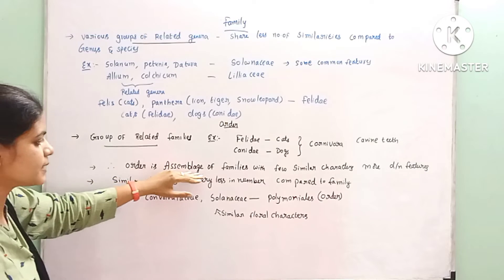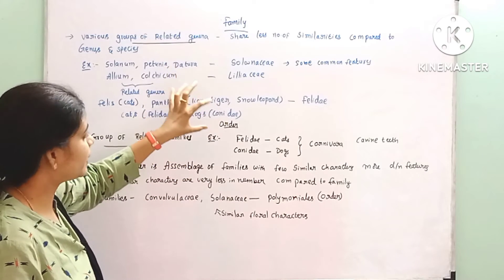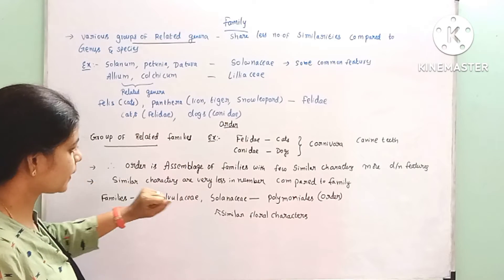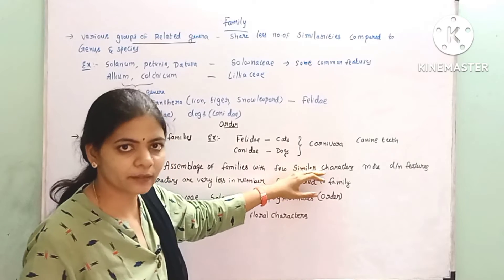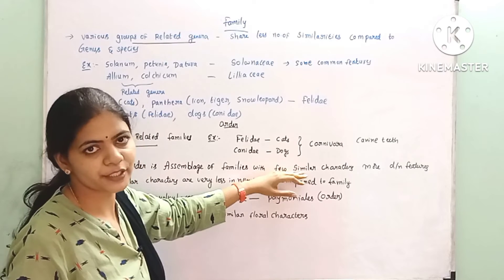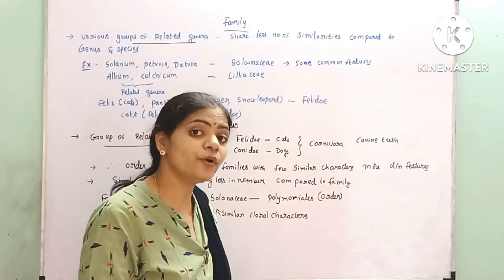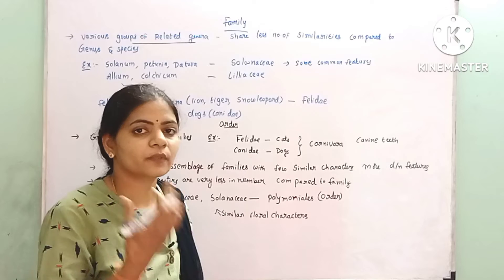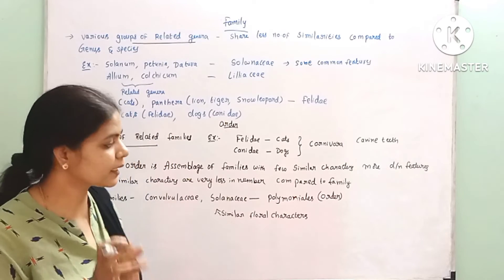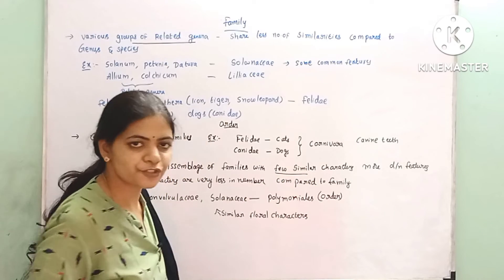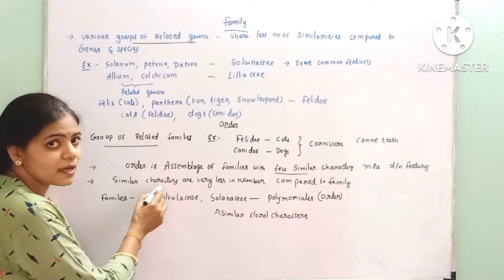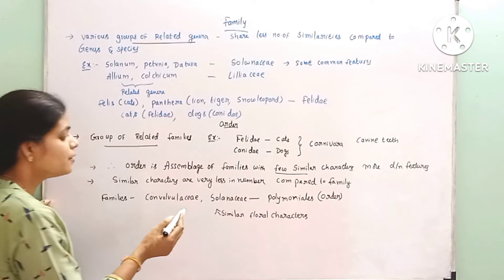So what is an order? Order is an assemblage of families. Similar families are combined to form an order. But compared to families, the order has few similarities — few similar characters and more different features. Similar characters are very less in number compared to families.